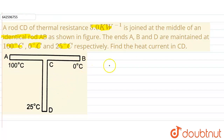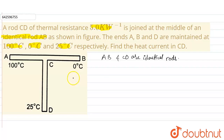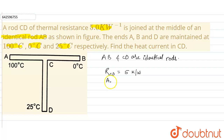In the given question, we have two rods: AB and CD. AB and CD are identical rods, which means everything about rod AB and CD will be the same. We have to find the heat current in rod CD. The thermal resistance of rod CD is given as 5 kelvin per watt. Since both are identical rods, the thermal resistance of AB will also be equal to 5 kelvin per watt.